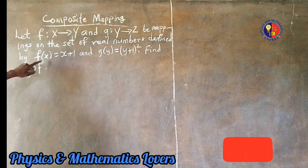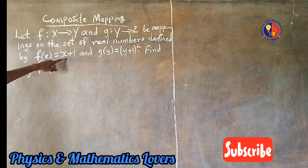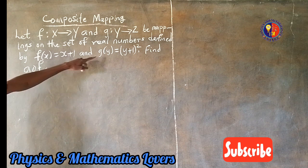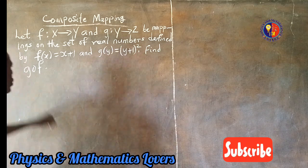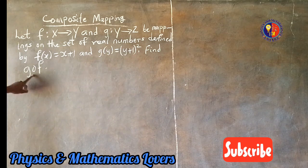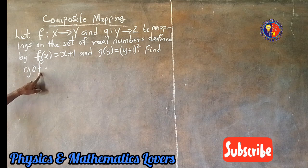by f(x) equal to x plus 1 and g(y) equal to (y plus 1) all squared. Find the composite function which is g of f.